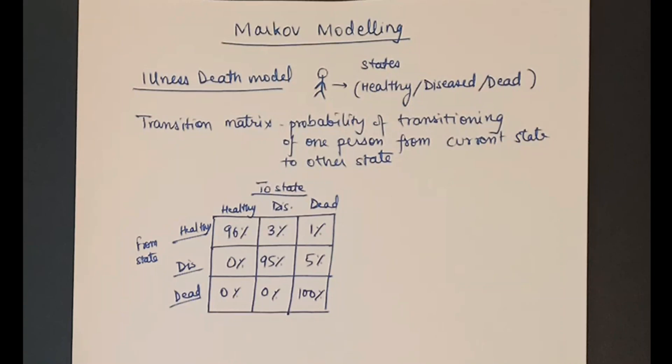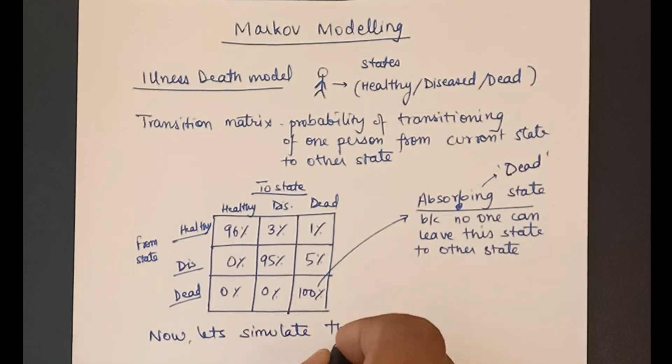These probabilities are gathered from conducting studies or from literature review and it will vary depending upon the disease. For example, transitioning from disease to healthy is not possible in certain diseases but it might be possible in some diseases. Every disease will have its own transition matrix.